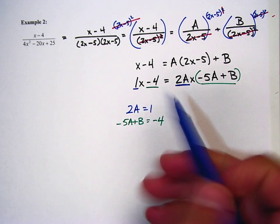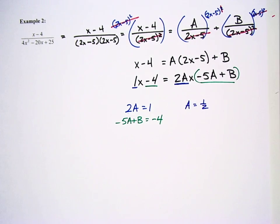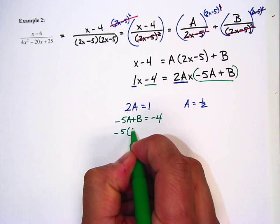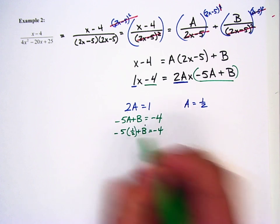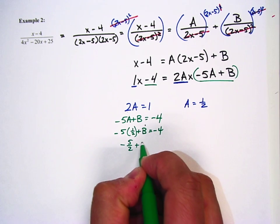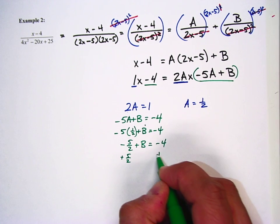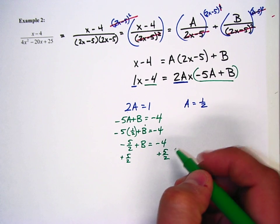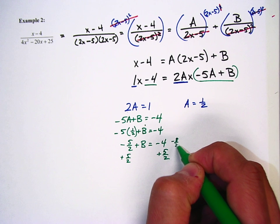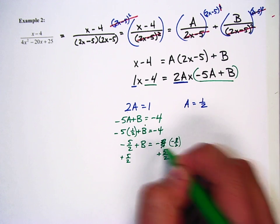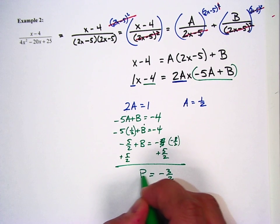This is pretty easy to solve because a equals 1 half. Plugging that in: negative 5 times 1 half plus b equals negative 4, which gives negative 5 halves plus b equals negative 4. Adding 5 halves to both sides — and everybody loves fractions — negative 4 is like negative 8 halves, so negative 8 halves plus 5 halves gives b equals negative 3 halves.